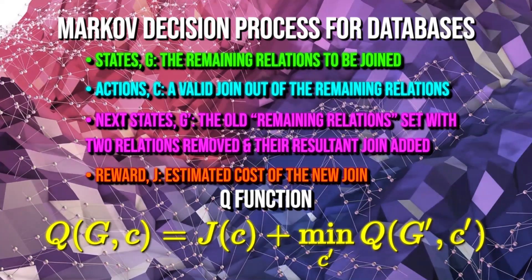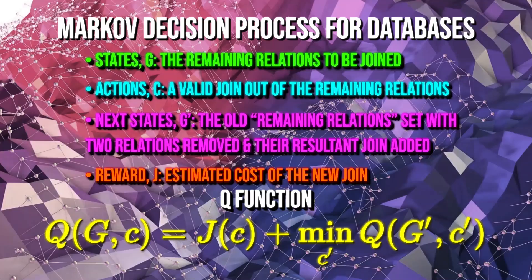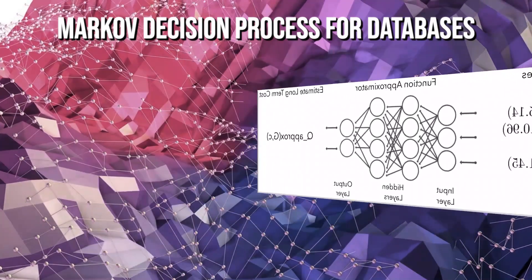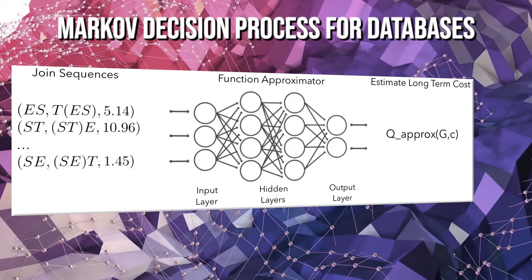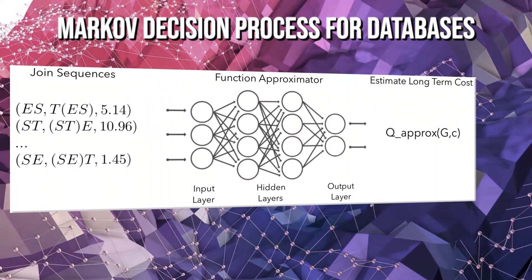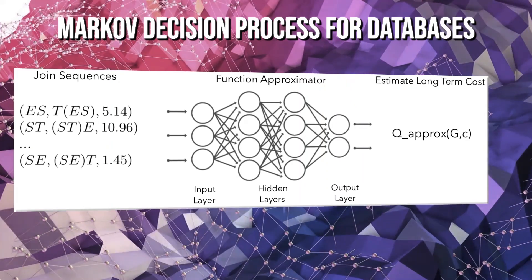Because we've defined these Markovian variables, we can define a Q function using the Bellman equation to describe the long-term cost of each join. And since we've defined a Q function, we can order joins in a greedy way. We'd start with the initial query graph, find the join with the lowest Q value, then update the query graph and repeat the process.